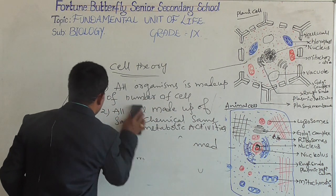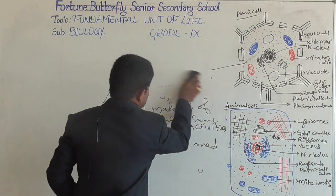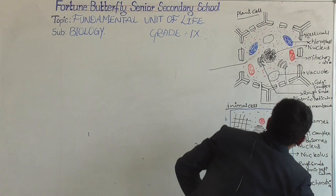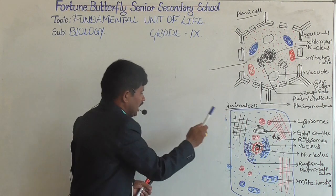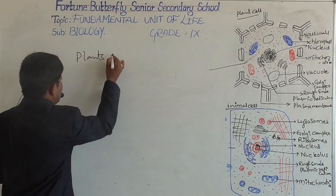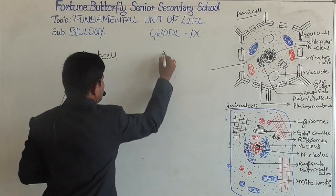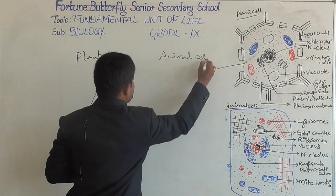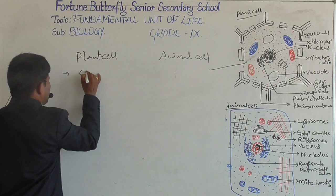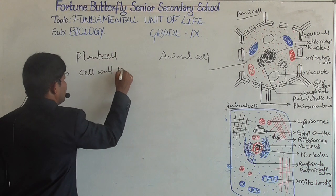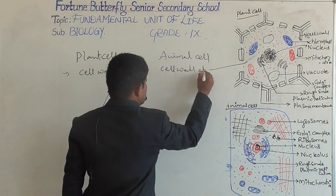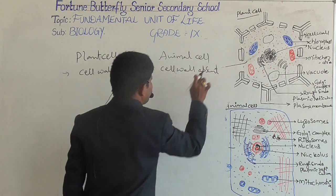Now, what are the main differences between the plant cell and animal cell? In the plant cell, the cell wall is present, whereas in the animal cell, the cell wall is absent. Plastids are present in the plant cell but absent in the animal cell. Centrioles are absent in the plant cell but present in the animal cell.